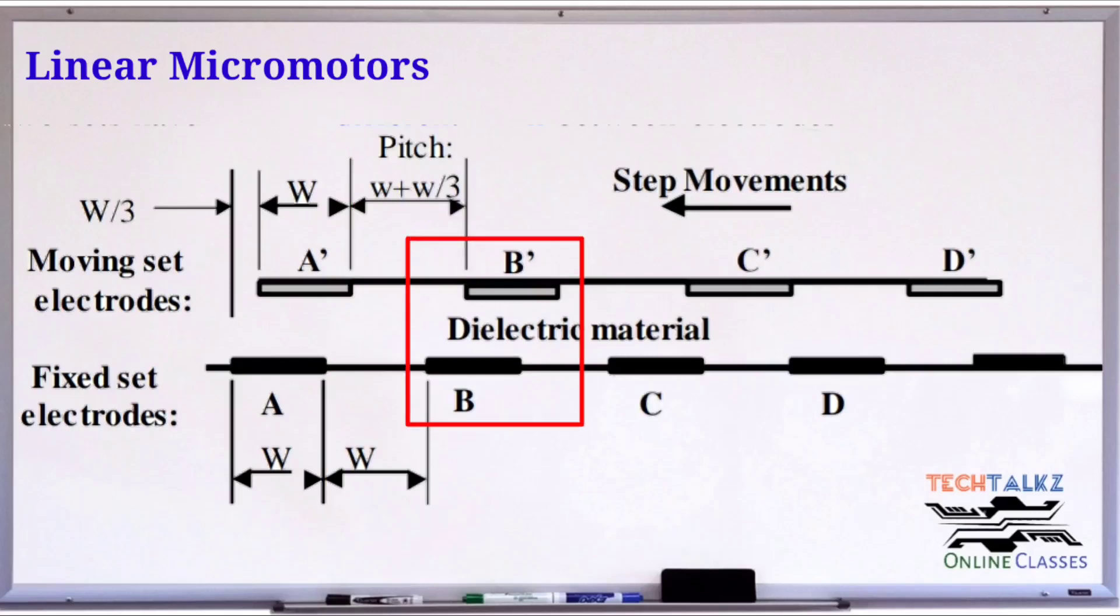Next, we can apply a voltage to B and B-dash. So B-dash will move towards left W by 3 distance. Again, C and C-dash are in misaligned condition. Now apply voltage to C and C-dash, and the electrodes continue moving left. The direction of movement is left. This is linear motors.